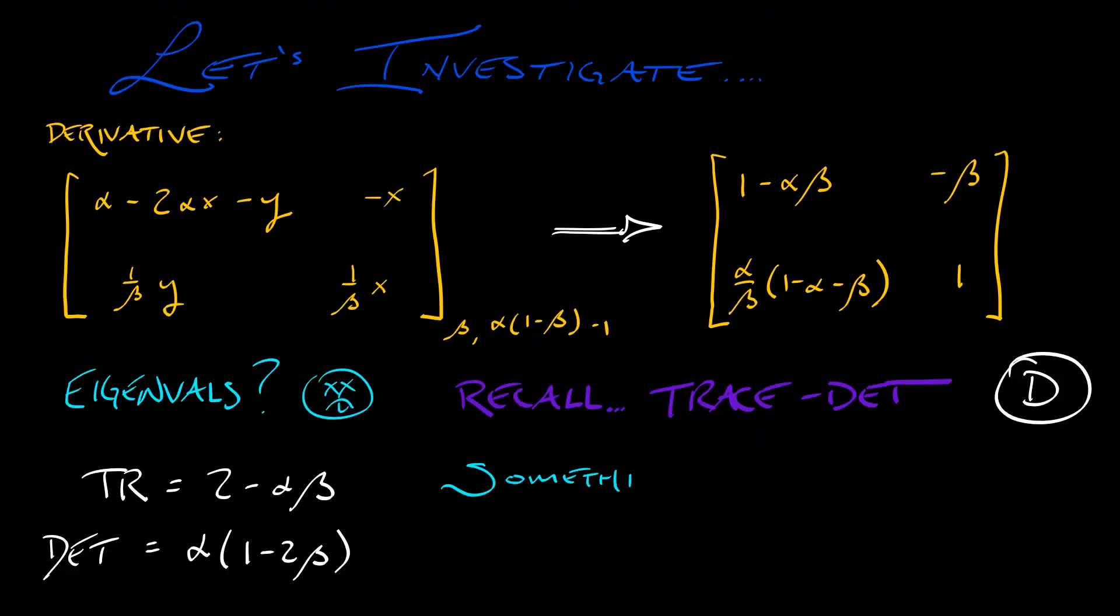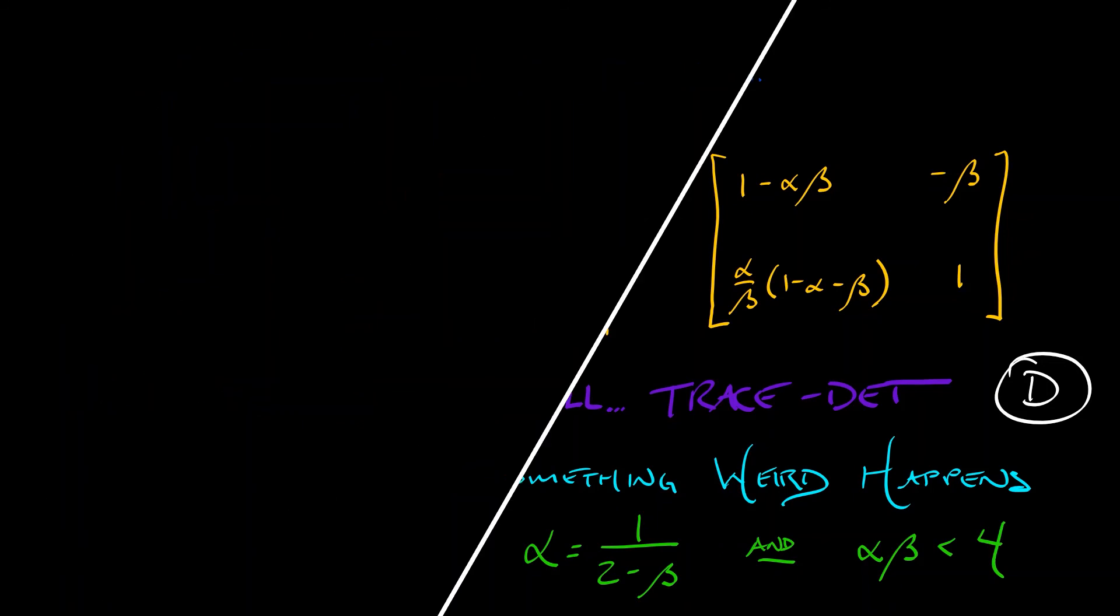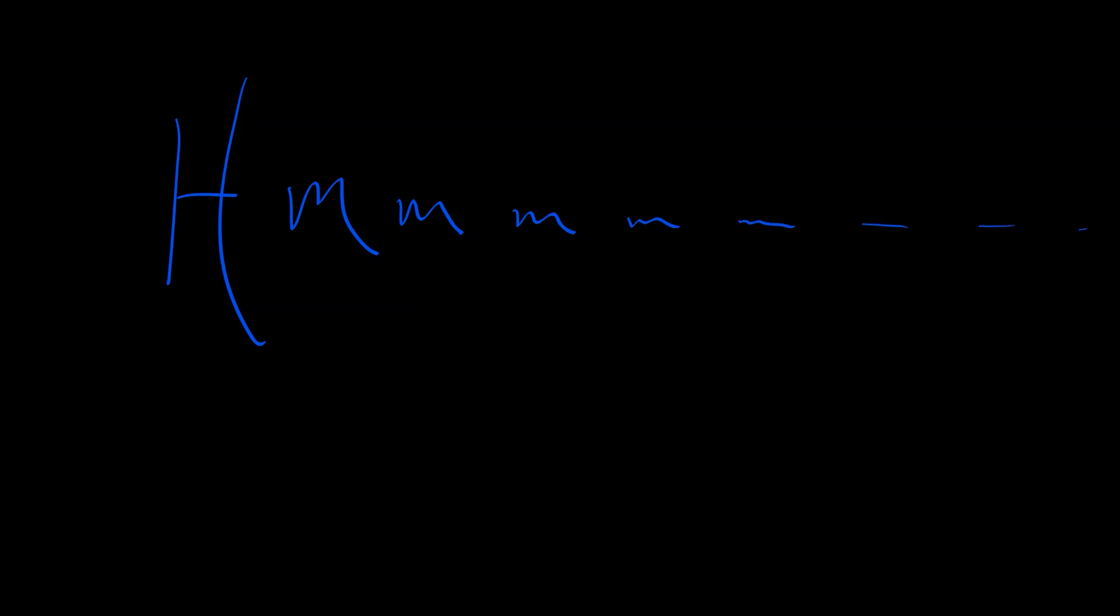And I claim that something weird happens at alpha equals 1/(2-beta), under the additional condition that alpha*beta is less than 4. There's something where you're going from having a spiral sink to a spiral source. There's an interesting transition there. That's not a type of bifurcation that we have seen before. Hmm, I wonder what is going on here. I think what this means is that we may have a few surprises left in store. We're not quite done with bifurcations.